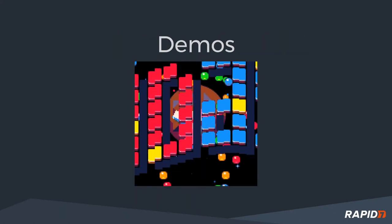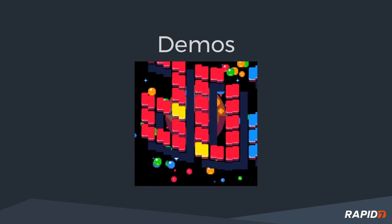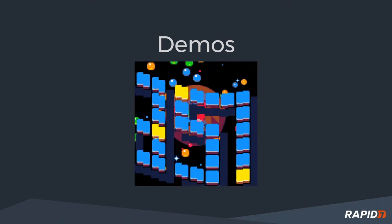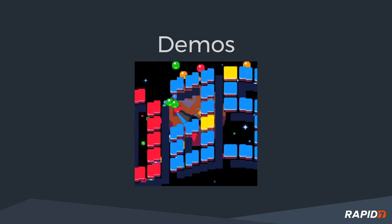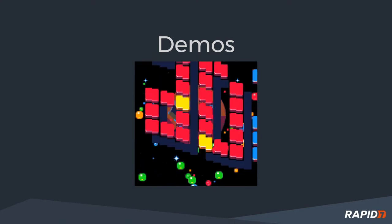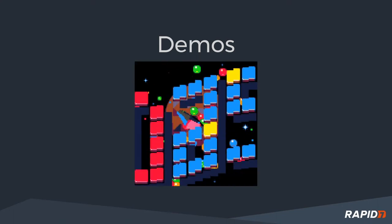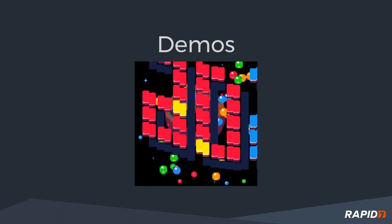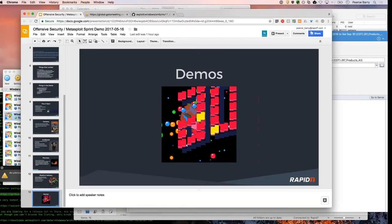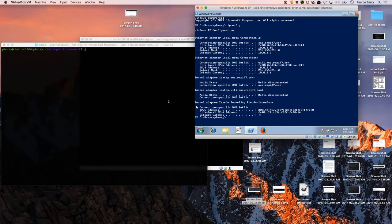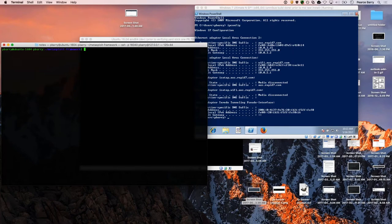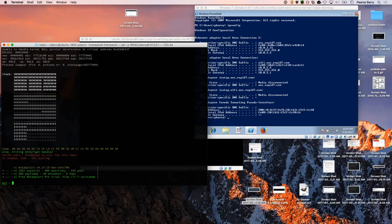Time for demos. So what I've got on the right side of the screen is a Windows 7 VM. Over here I've got my MSF console, and I'm going to use the new EternalBlue exploit. I'm going to set the payload to be reverse TCP Meterpreter. This came in from the community from ZeroSum and Jenna Magius, and it works really well.